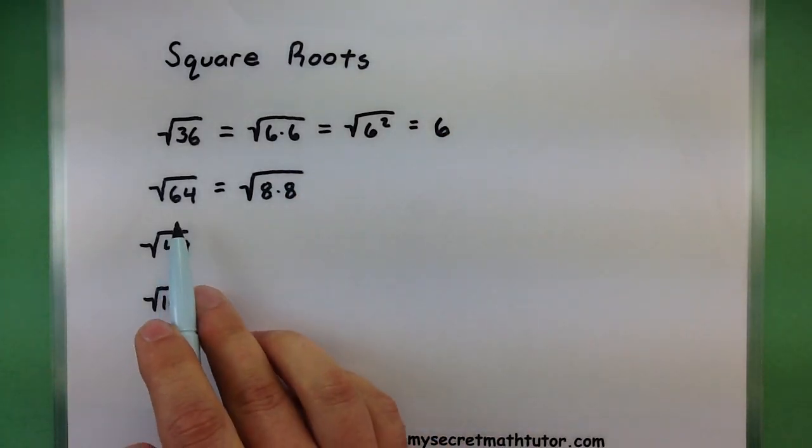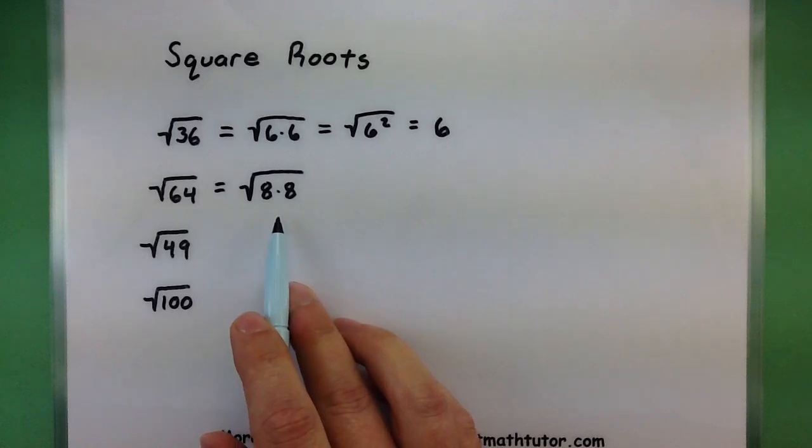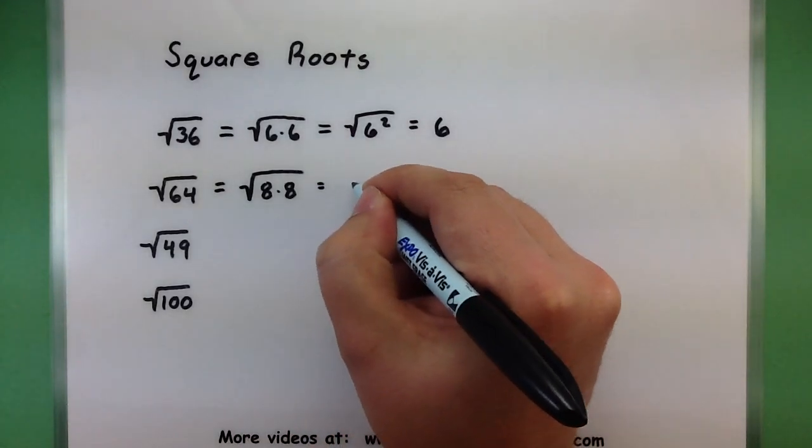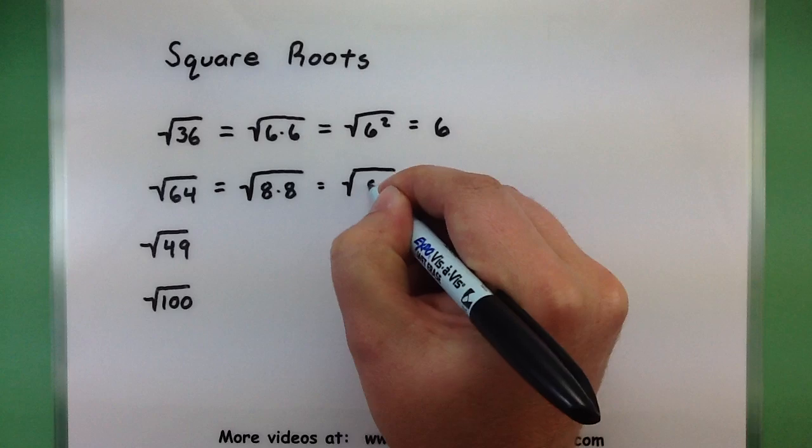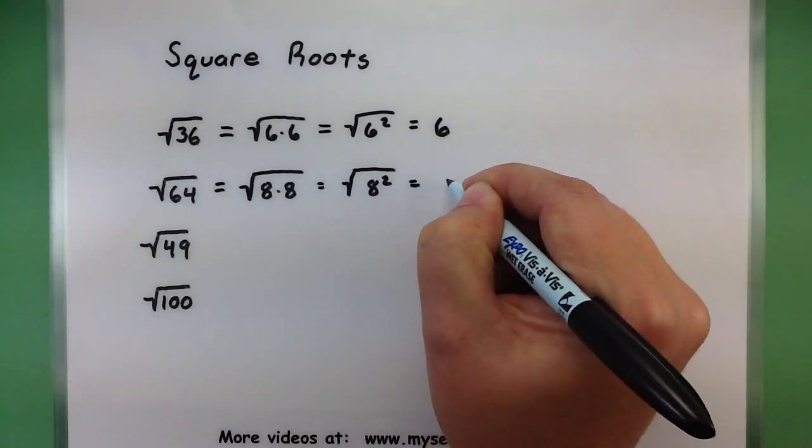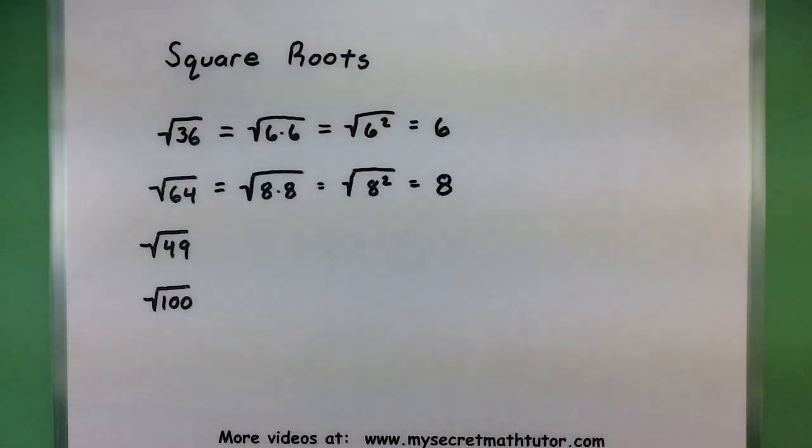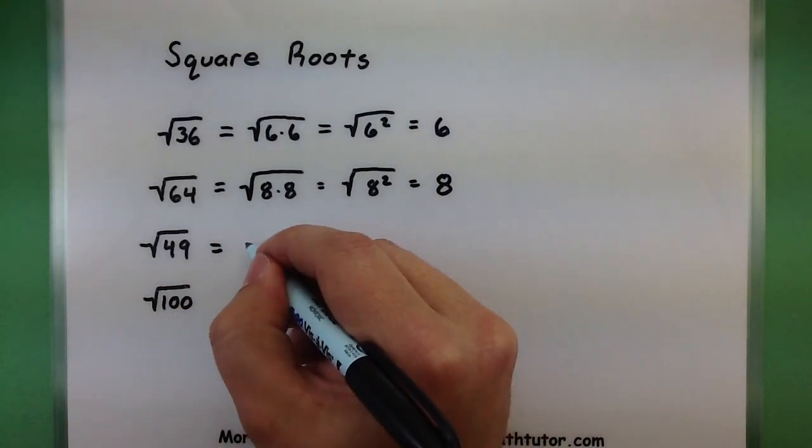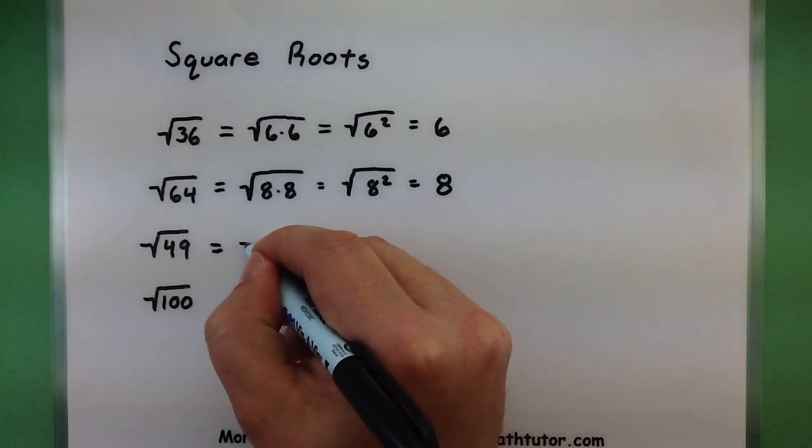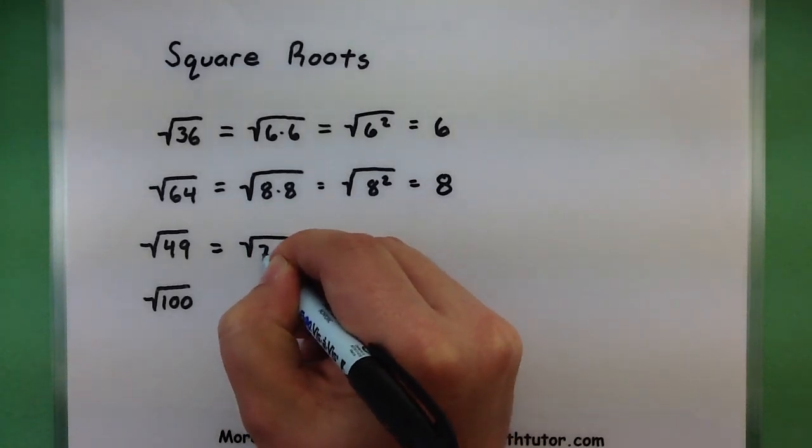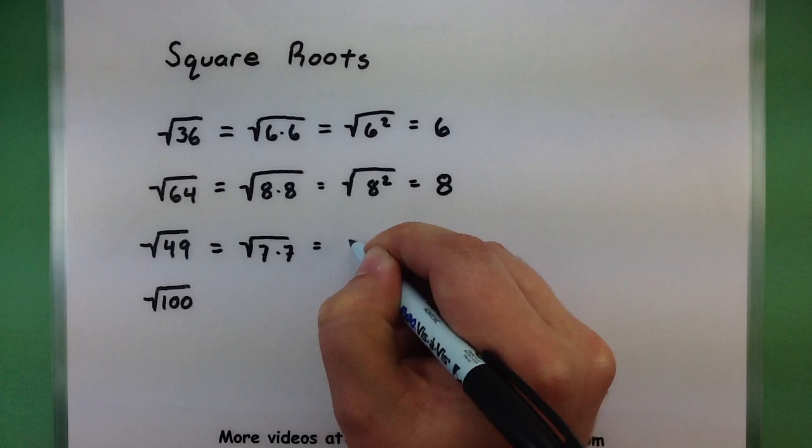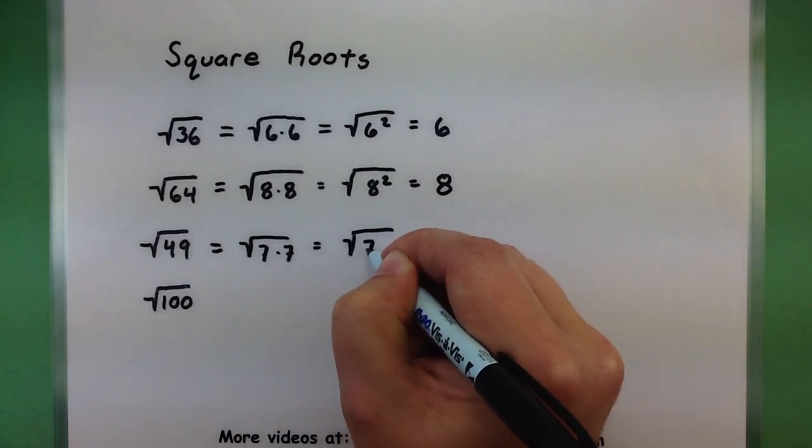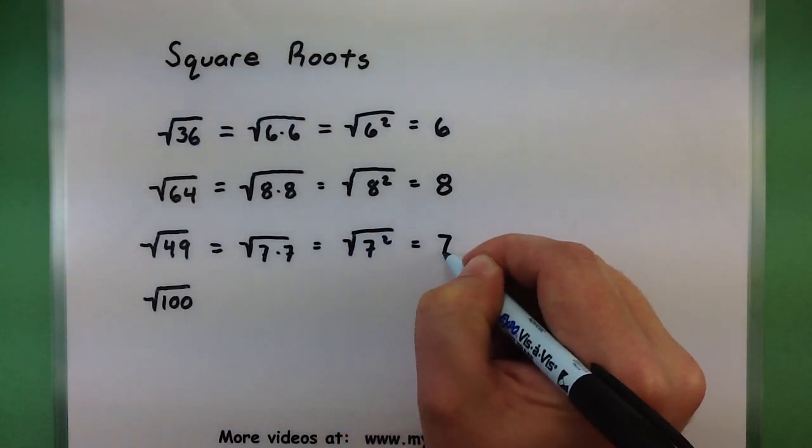I'm going to continue writing down all the steps so you can see really what's working in the background. So here I have the square root of 64. 8 times 8 is equal to 64. So I can look at this as 8 squared or the answer is just 8. Alright, the numbers are getting a little bit bigger here. No worries, we'll continue on. Let's see 49, 7 times 7. So I have the square root of 7 squared or 7.